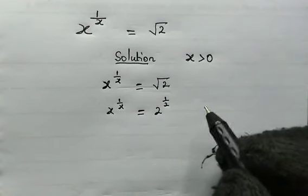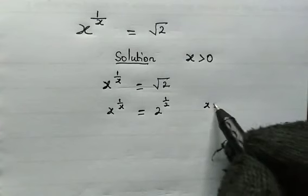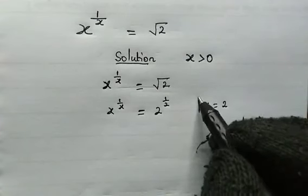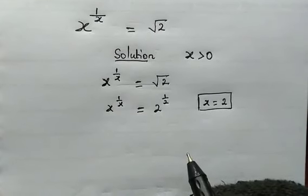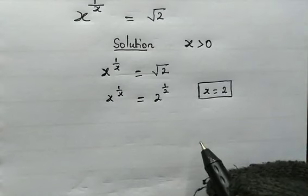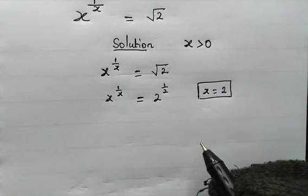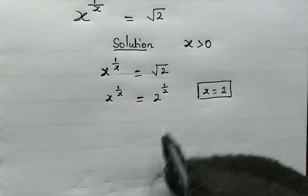Now, we can see from here that obviously x is equal to 2 is a solution. Okay, now let's try manipulating this equation to find out if we have more positive integers of x that will satisfy this equation.